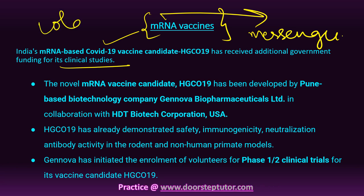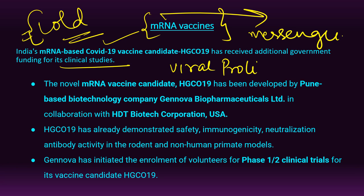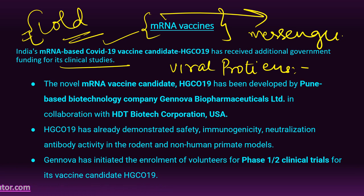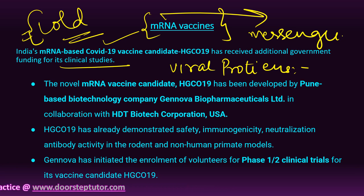mRNA vaccines trick the body into producing some of the viral proteins itself. They work by using mRNA — the molecule that puts DNA instructions into action inside a cell, where mRNA is used as a template to build a protein. Scientists produce a synthetic version of the mRNA that a virus uses to build its infectious proteins. This mRNA is delivered into the human body, whose cells read it as instructions to build that viral protein, creating some of the virus molecules. These proteins are solitary in nature and do not resemble a complete virus.